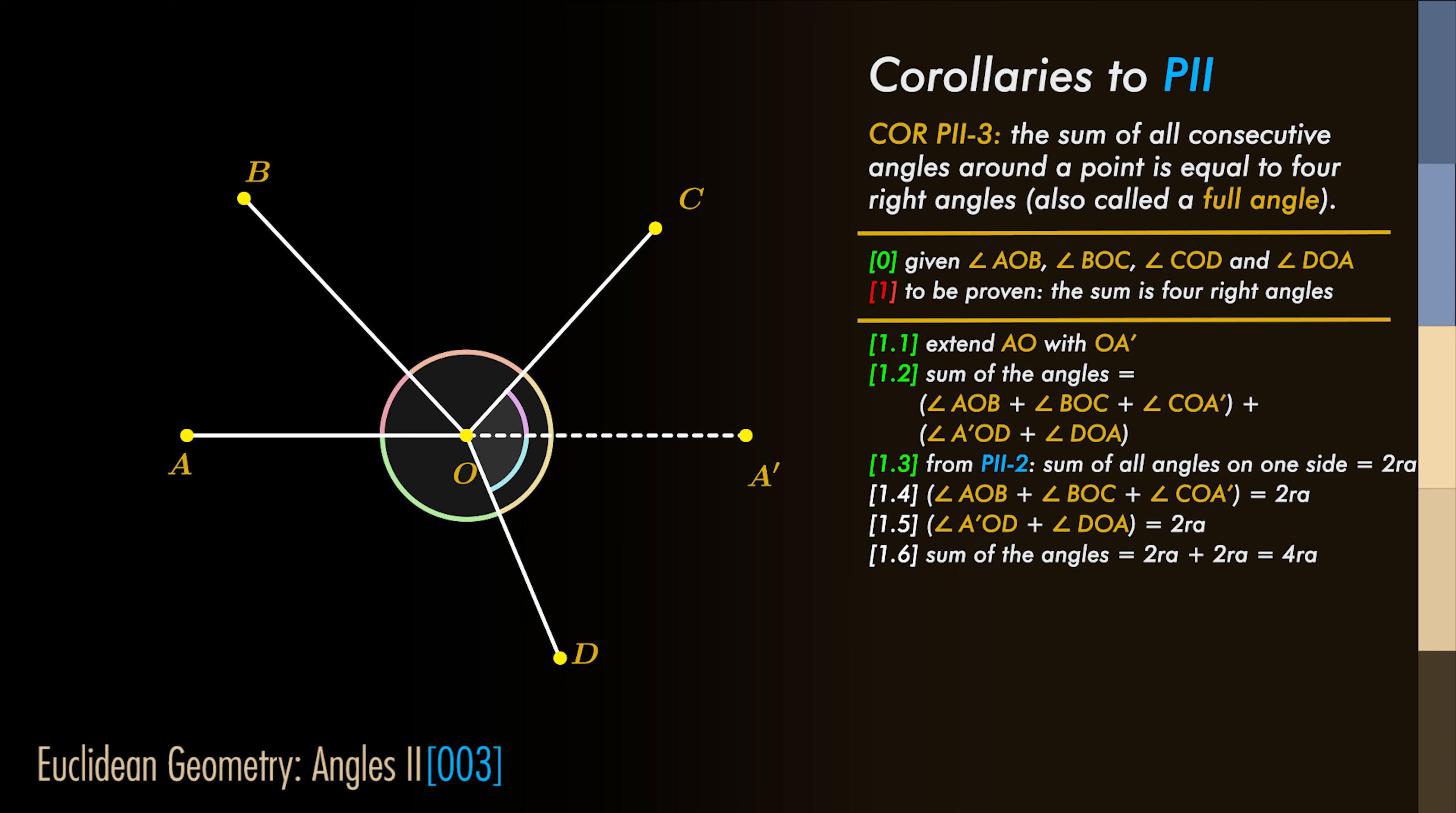we have that all the angles on one side of AA' have a sum of two right angles, and all the angles on the other side of AA' have a sum also of two right angles.